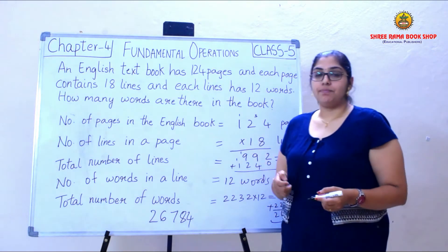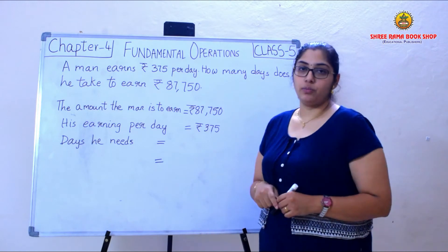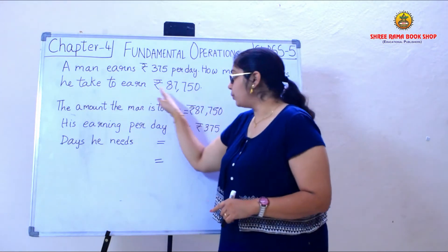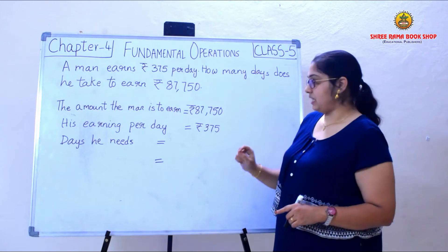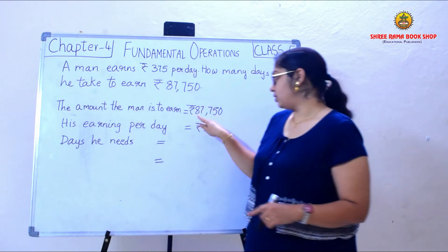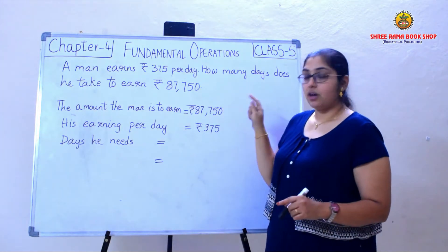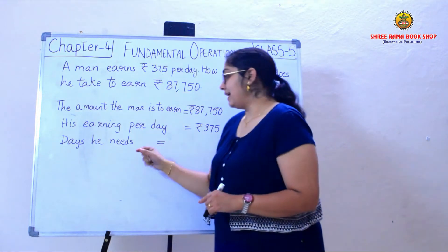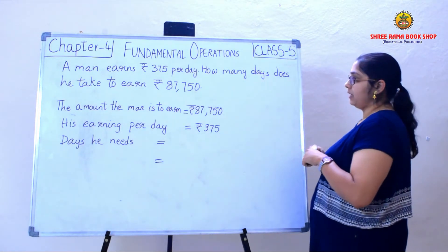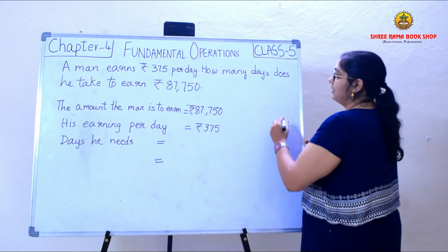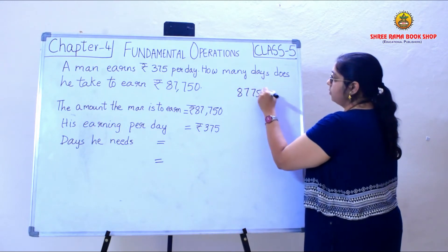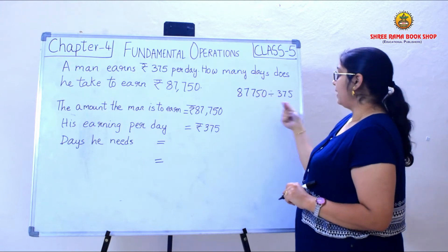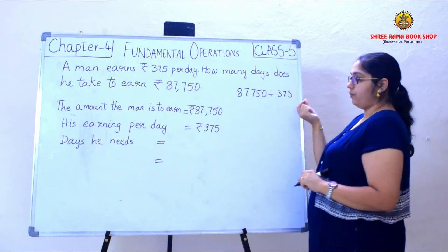Now I will take one more example with divisions. A man earns Rs. 375 per day. How many days does he take to earn Rs. 87,750? The amount the man should earn is Rs. 87,750, and his earning per day is Rs. 375. To find the number of days he needs, we divide 87,750 by 375.